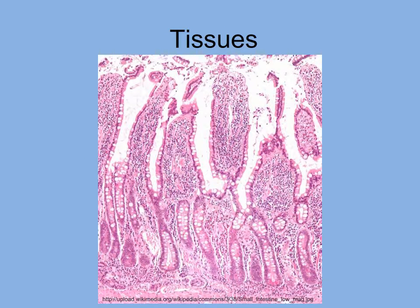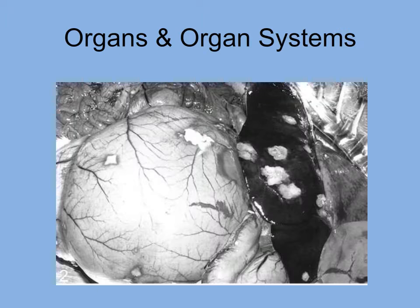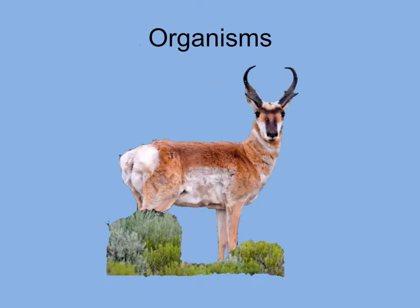Tissues are associations of cells — millions of cells form the tissue lining the small intestine. Organs perform certain functions for living organisms and are composed of tissues. The stomach, liver, intestines, and other organs are part of the digestive system. Multicellular organisms, such as this pronghorn, rely on their various organ systems to maintain homeostasis and keep them alive.